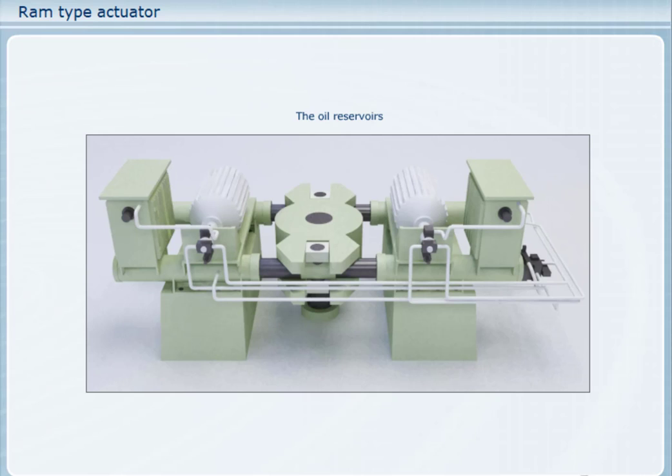The steering gear also has a control system consisting of several hydraulic and electric components, securing safe operation and manoeuvrability of the ship. The steering gear and the control system are supplied with power from the supply panels in the steering gear compartment.